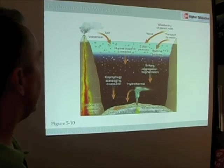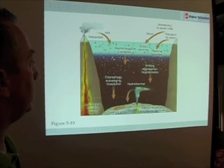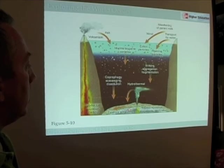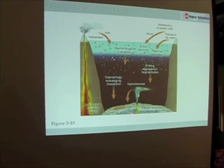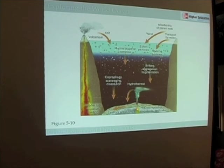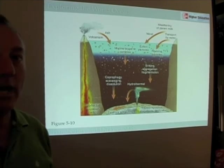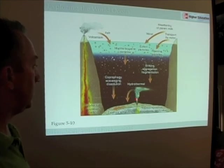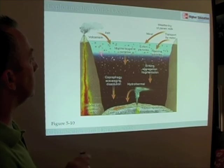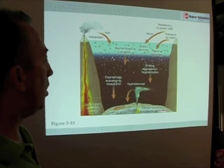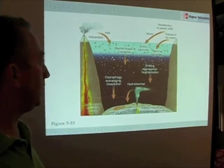The other important part of figure 5-10 is hydrothermal events. As hot seawater circulates through cracks in the seafloor near oceanic ridges, it accumulates different kinds of metals and other elements. That superheated, mineral-laden water is then pumped out in a hydrothermal vent, and those minerals, upon encountering cold seawater, precipitate. So here we have a source of chemical sediments. We have lithogenous sediments, biogenous sediments, and chemical sediments — all produced and deposited in the world ocean.